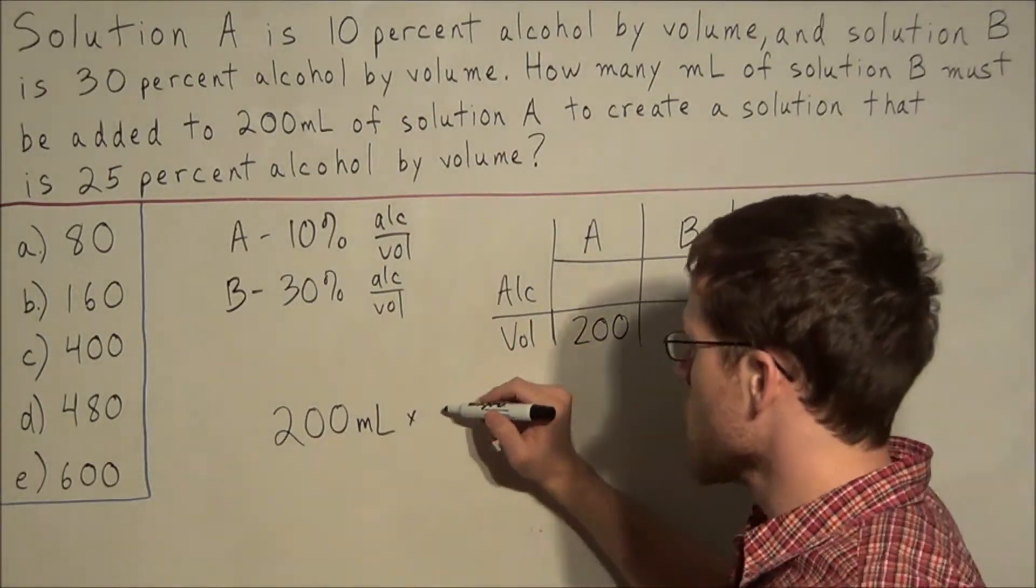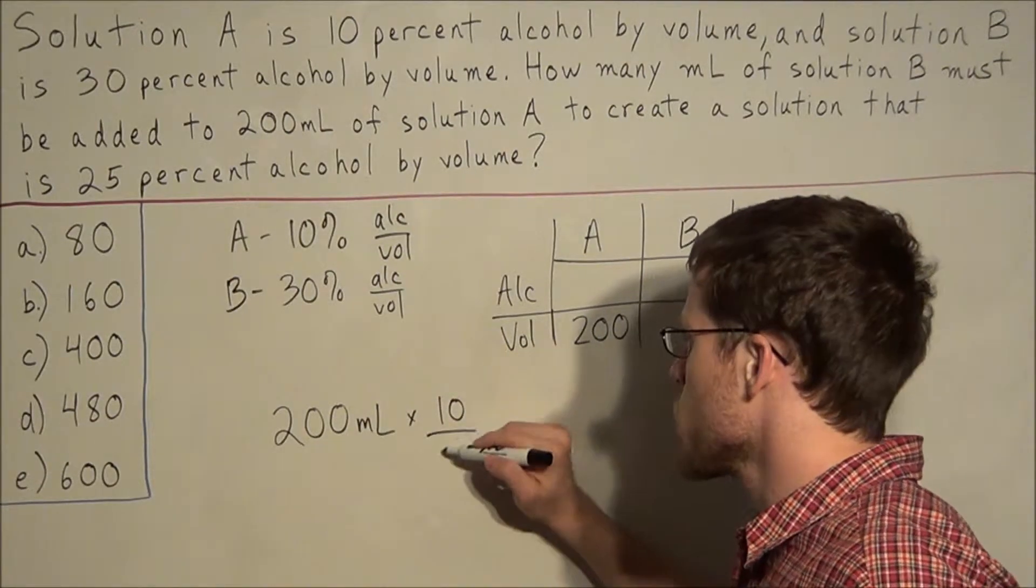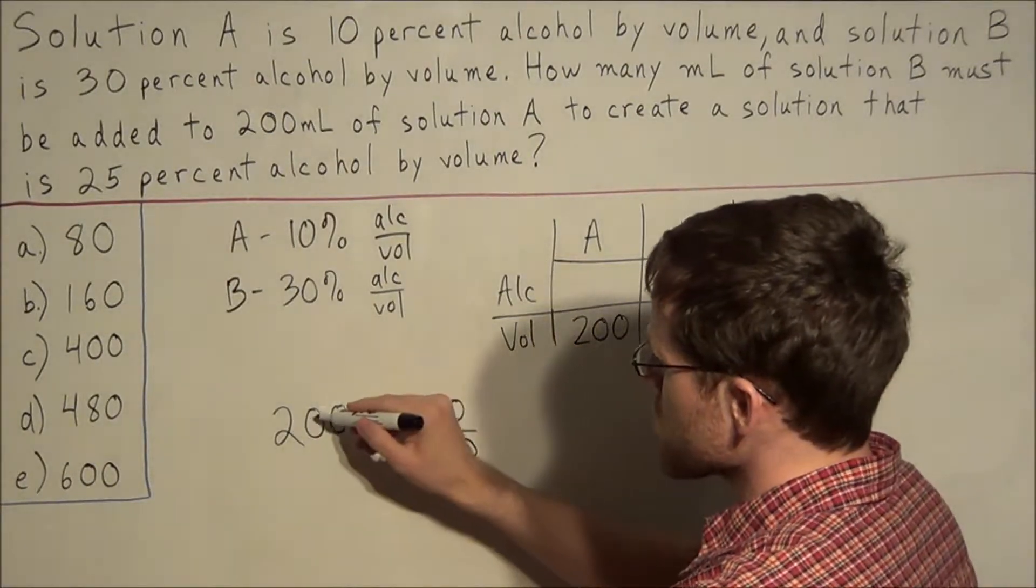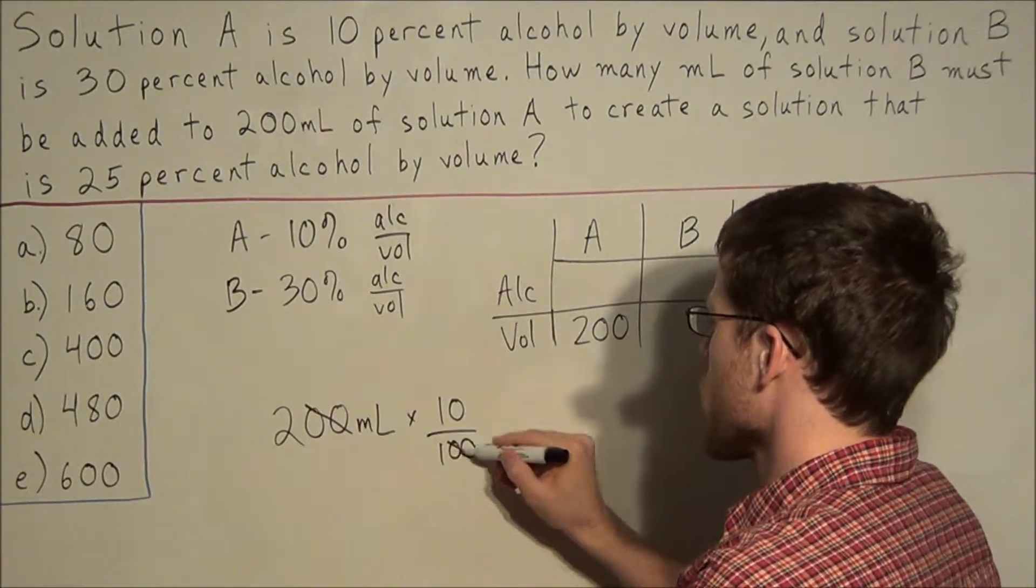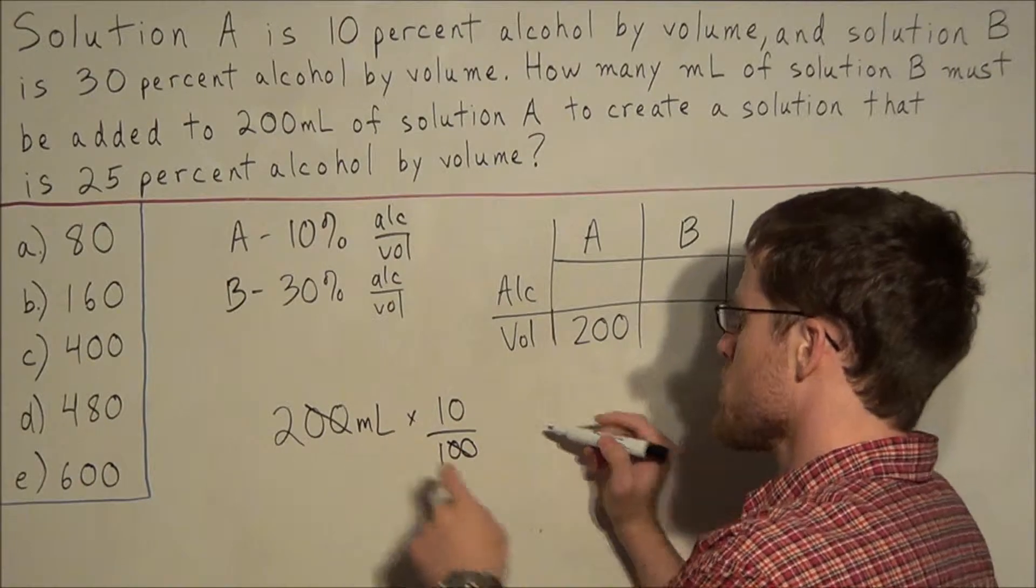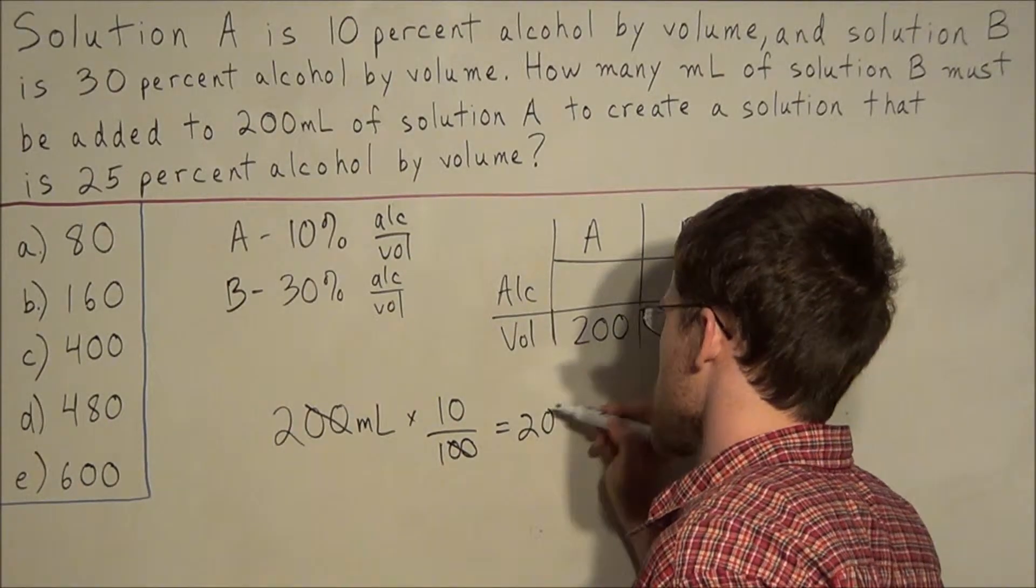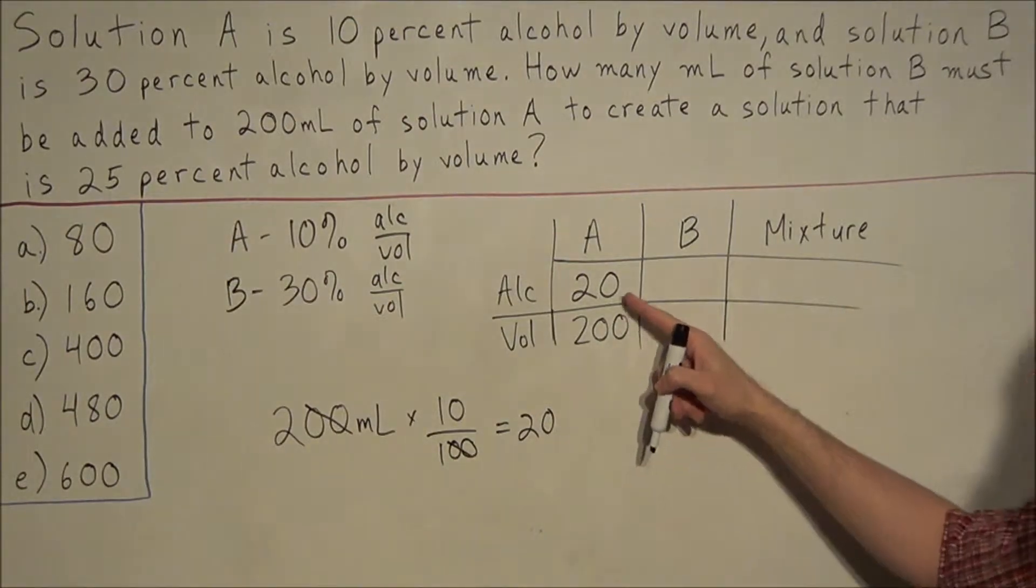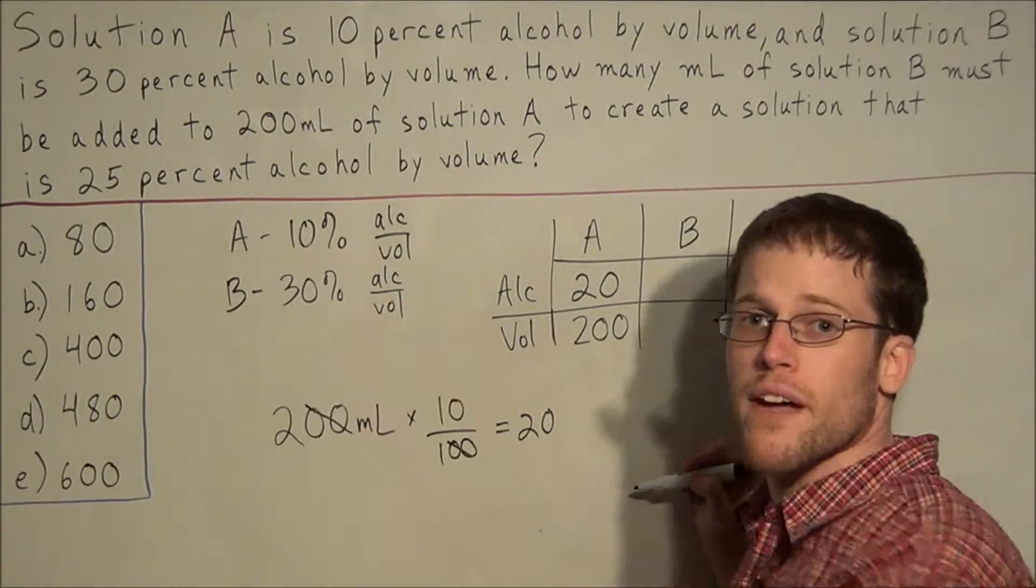So if we find 10% of 200, which we can accomplish by multiplying by 10 over 100, this reduces to 200 over 100 simplifies to 2 and 2 times 10 is 20. So we have 20 milliliters of alcohol. And if you look, 20 over 200 reduces right back to 10%.